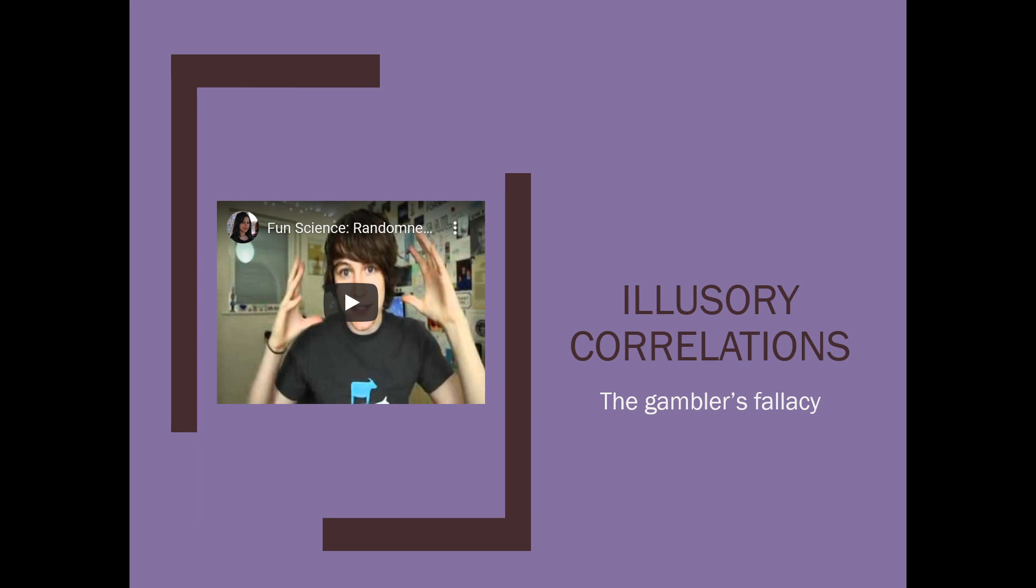The gambler's fallacy was illustrated by Charlie's friend who thought the roulette wheel had to come up the other color. It had to. It's been this color too many times. It's got to come up the other color. No, it doesn't.